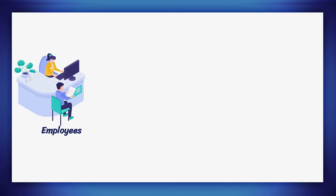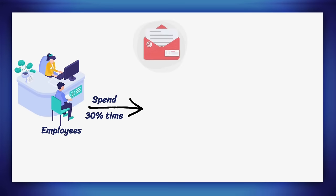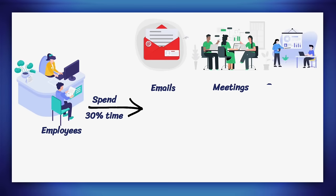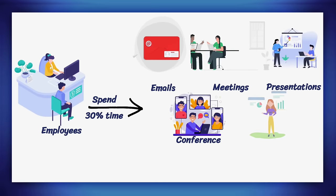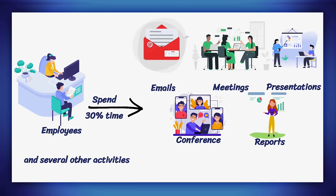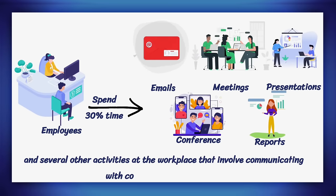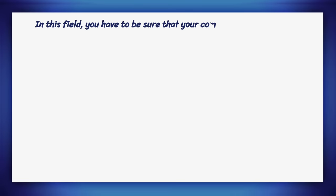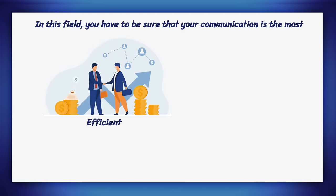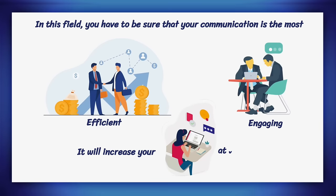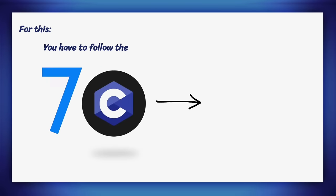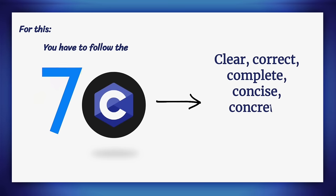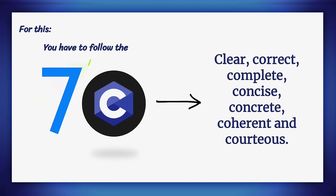Usually, employees spend 30% of their time on emails, meetings, presentations, conference calls, reporting, and several other activities at the workplace that involve communicating with colleagues and superiors. In this field, you have to be sure that your communication is the most efficient and engaging, as it will increase your productivity at work. For this, follow the seven C's of effective communication: clear, correct, complete, concise, concrete, coherent, and courteous.